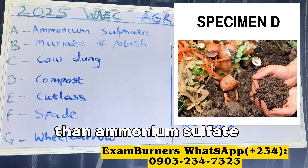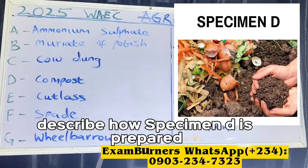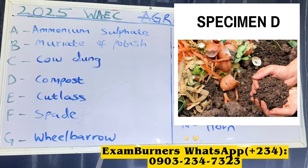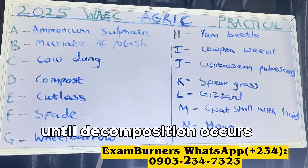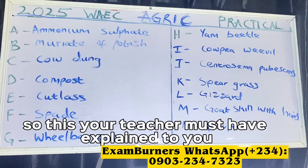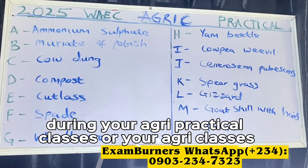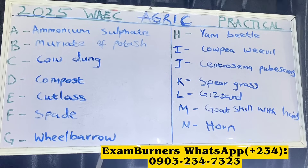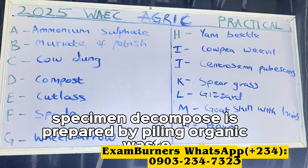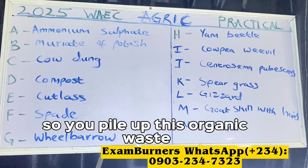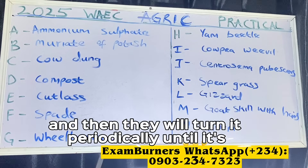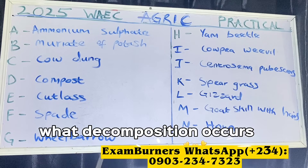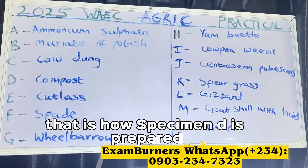Describe how specimen D is prepared. Compost is prepared by piling organic waste in layers, moisturizing them, and turning them periodically until decomposition occurs. Your teacher must have explained this during agric practical classes. You pile up organic waste — they could dig the ground, put the organic waste inside, wait for it to begin breaking down, then turn it periodically until full decomposition occurs.